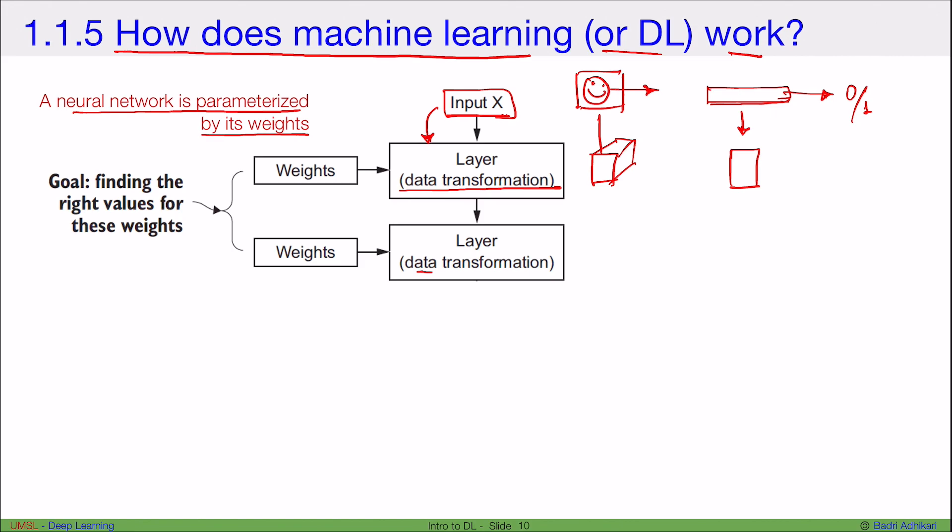In the second layer again, it goes through further data transformation and what decides this transformation are these weights that you have in the model. So these weights multiply or do something to the input data to produce transformed representations of your output. Same thing happens in the subsequent layer. Whatever comes out of the previous layer, you multiply or add or do something with these weight parameters and then you get the next output.